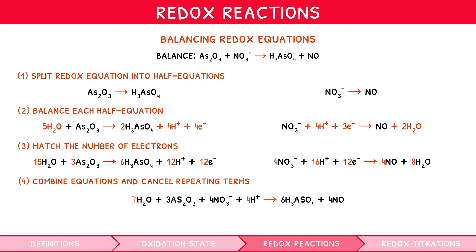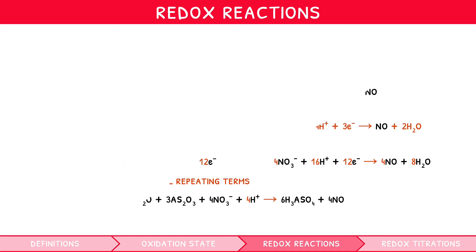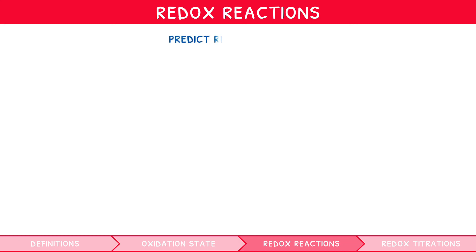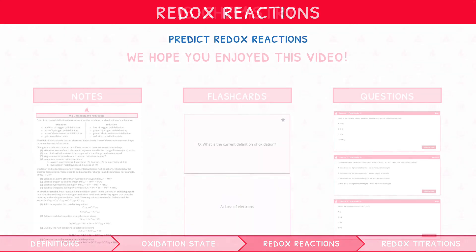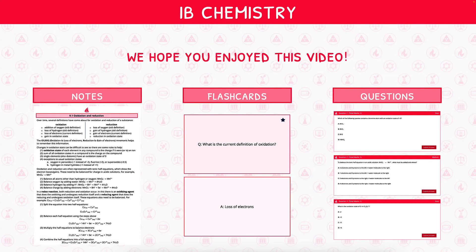In your IB Chemistry exam, along with balancing redox equations, you are expected to predict whether a specific reaction will take place. You've now reached the end of the preview for this IB science video — if you want to check out the full video, head over to our website and select a membership plan today.